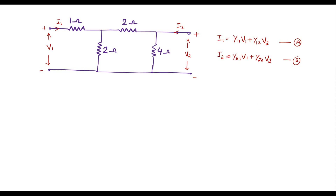I will solve this using node analysis. Here we have one node connected to v2, so the voltage at that node is directly v2. Let me assume the voltage at the other node is vx. Let the current through one branch be x, through another branch be y, and through the third branch be z.